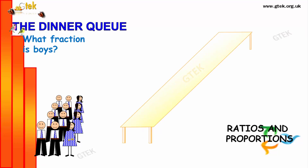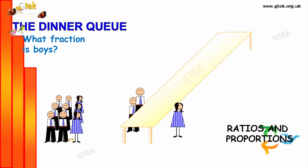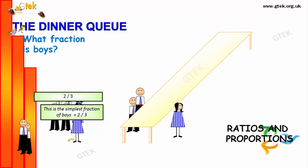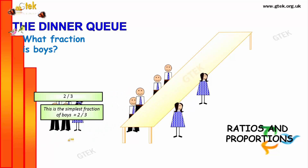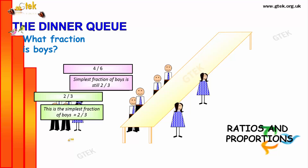We got the dinner table. So, 2 among 3. The simplest fraction of boys is 2 divided by 3. We got a pair, another pair. So, what fraction is boys? It's 4 boys available among 6. Fantastic. 4 by 6. The simplest fraction of boys is 2 by 3.